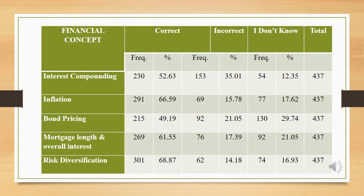To determine the financial literacy level of the respondents, five questions developed by the Financial Industry Regulatory Authority (FINRA) — focusing on interest compounding, inflation, bond pricing, relationship between length of the mortgage and the overall interest rate, and risk diversification — were tested. The result reveals that the majority of respondents, 68.87% to be precise, correctly answered the risk diversification question, while only 49.19% gave the correct response to the mortgage length and interest rate question. Also, 7.09% could not answer even a single question correctly, indicating very weak financial knowledge.